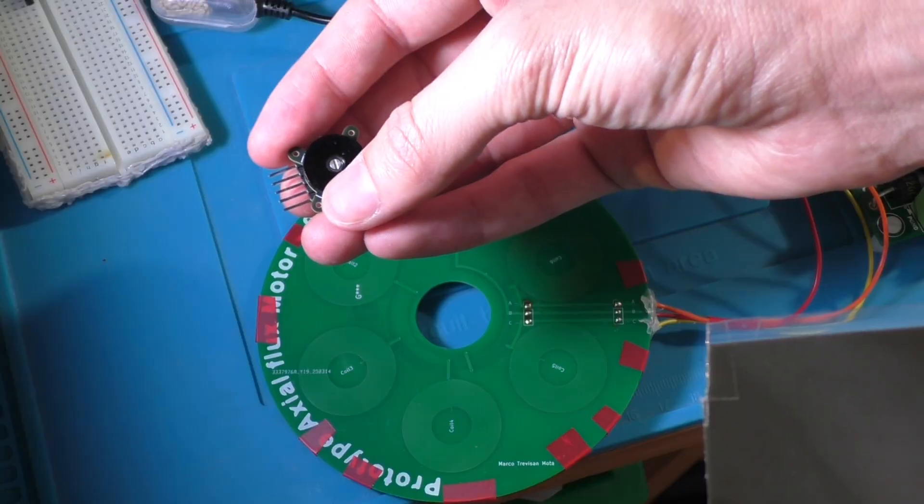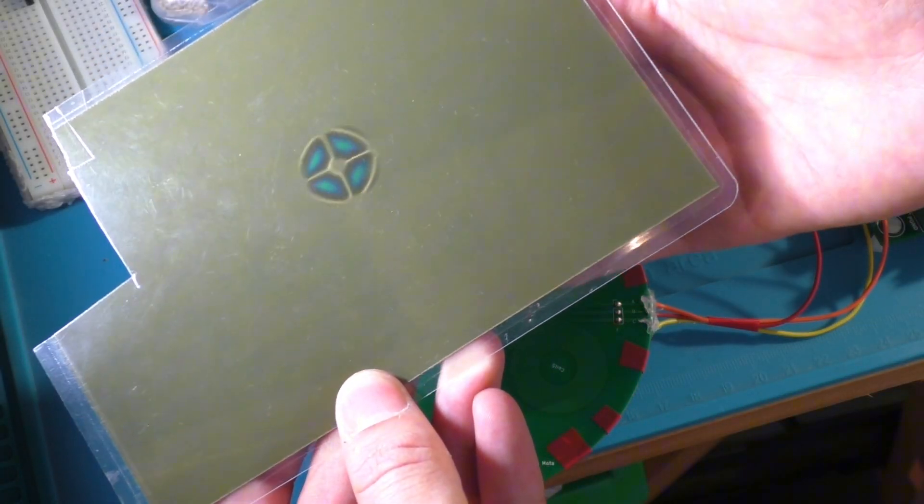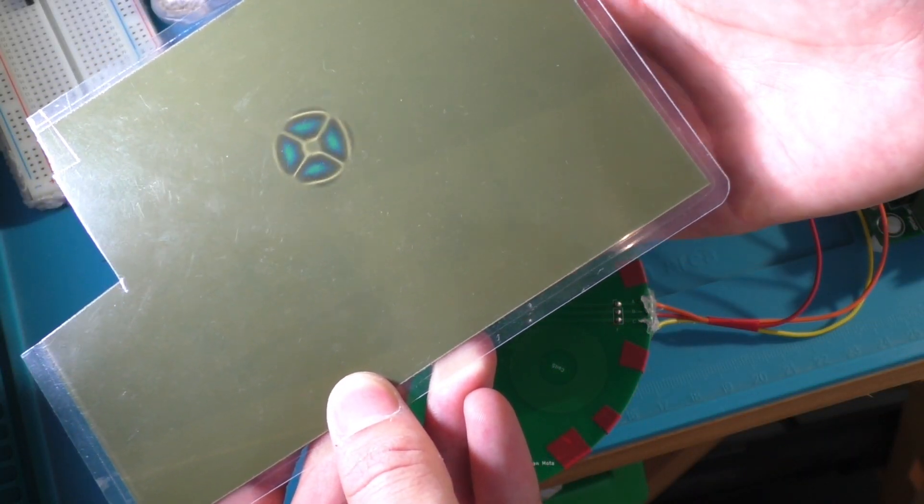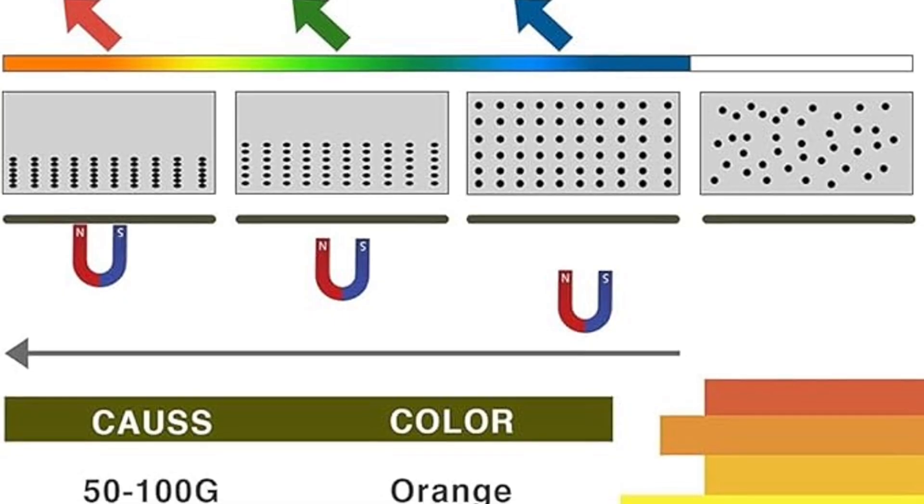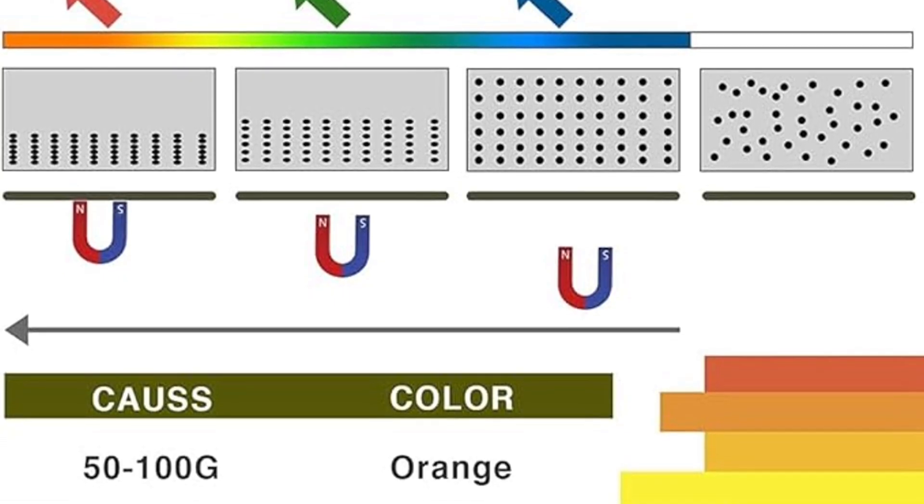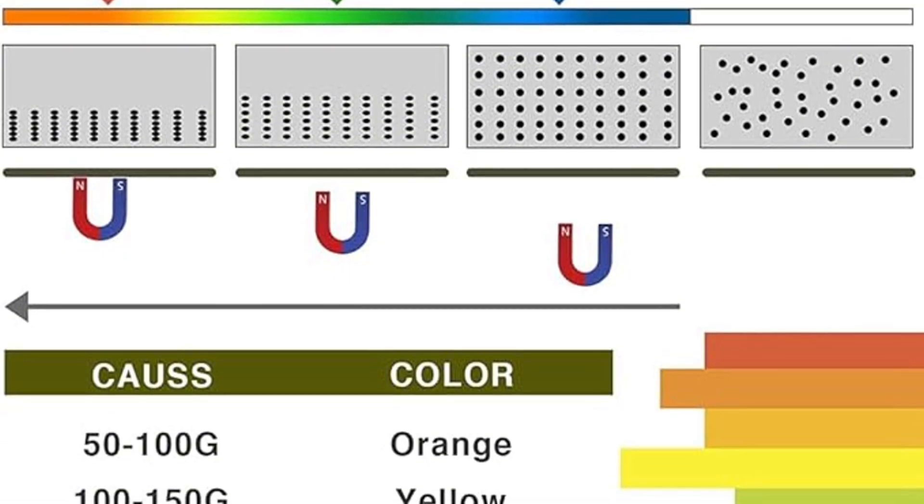So this magnet, if we put the magnet behind the sheet, the sheet will change color. This is thanks to the crystals that this sheet is composed of that change light refractivity depending on the magnetic fields.